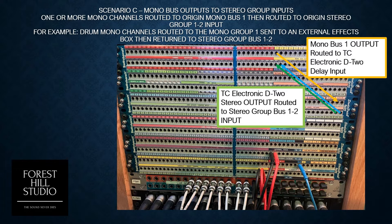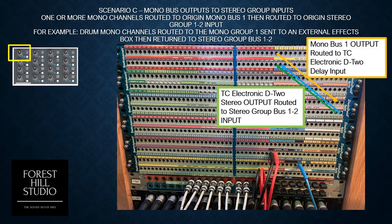The next scenario: a mono bus output to stereo group input for one or more channels routed on Origin. Mono bus 1, for example, routed to stereo group 1 and 2. You can see up here where we use the mono channel grouping to group 1. We patch that mono bus output over to our digital delay, and being a mono channel send, we bring the stereo channels back to group bus 1 and 2. So to reiterate: we go from the mono group output number 1, run it to our effects box, and bring the stereo returns from that effects box back to groups 1 and 2, getting the stereo effect.